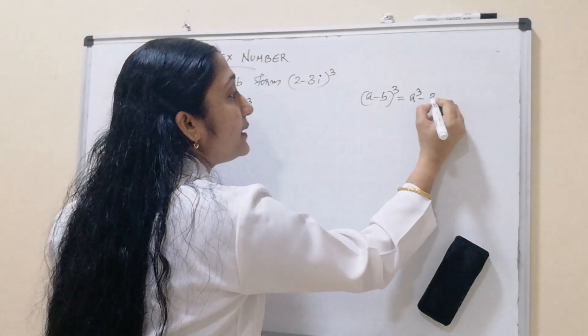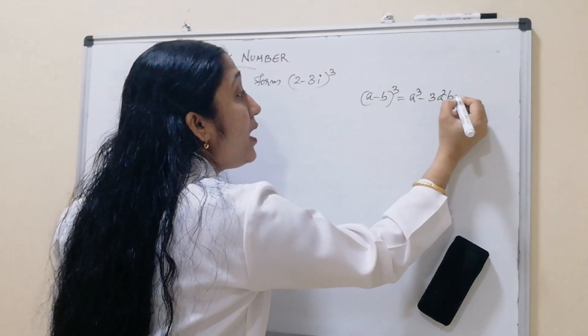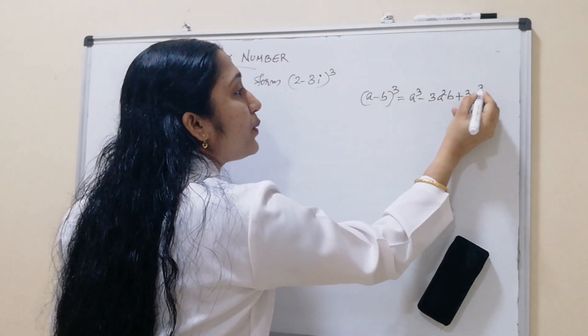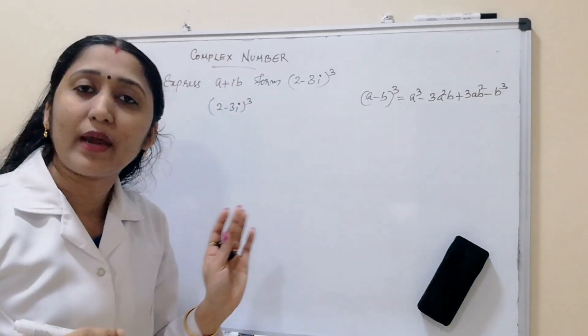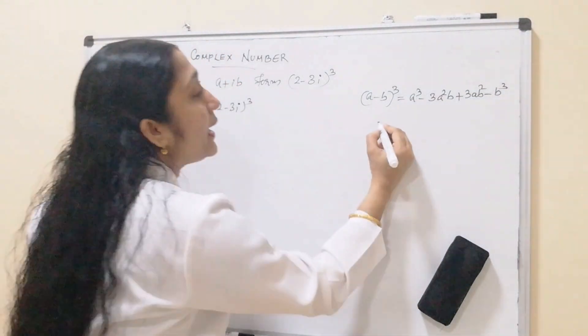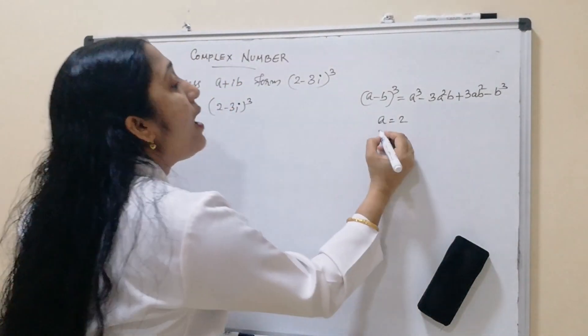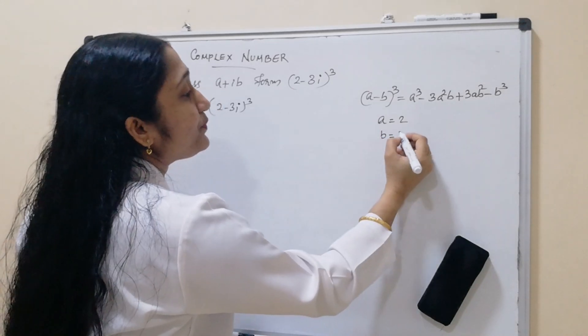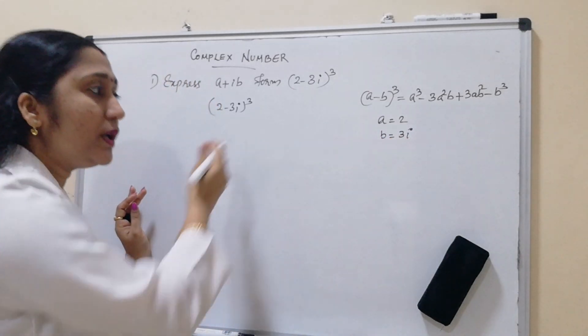That means a cube minus 3a square b plus 3ab square minus b cube is the form of a minus b whole cube. So from here, a is equal to 2 and b is equal to 3i. So let us substitute here.